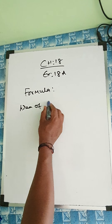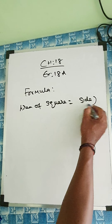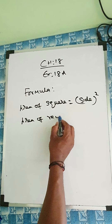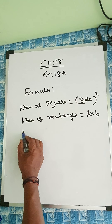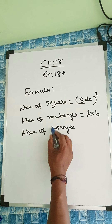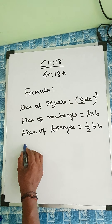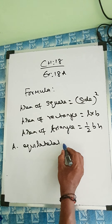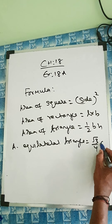Area of square equals side squared (square units), and area of rectangle equals L into B (square units). Area of triangle — if it's a right triangle — is half base into height. And area of equilateral triangle: the formula is root 3 by 4 times A squared.